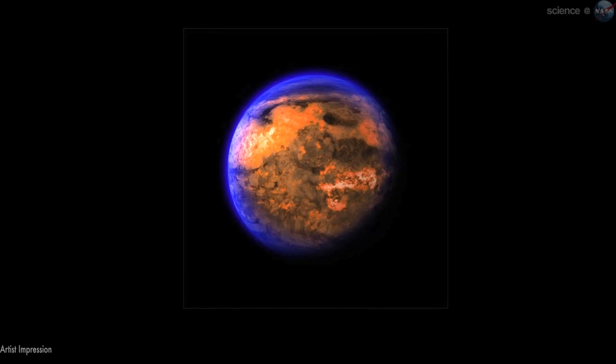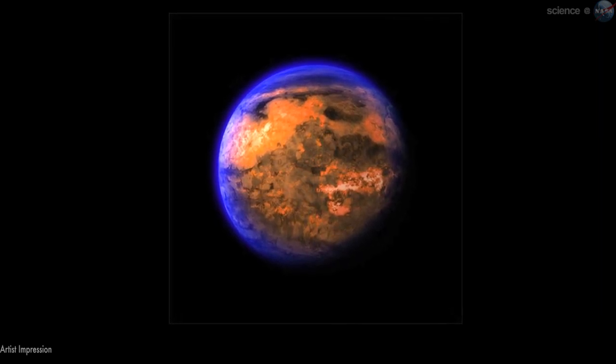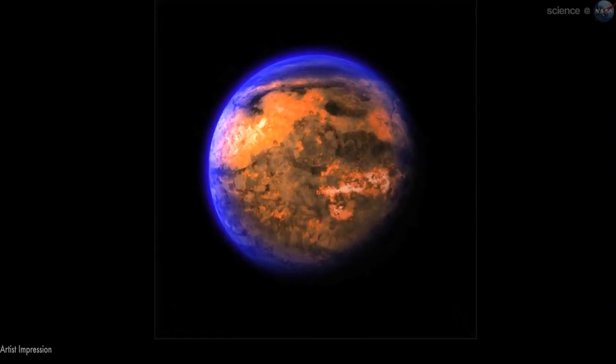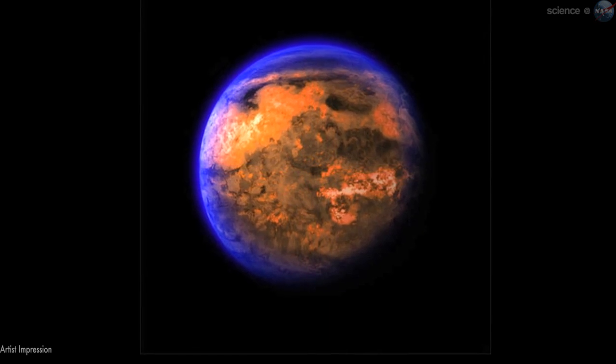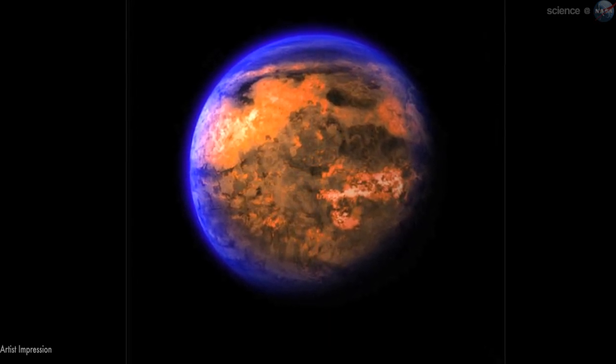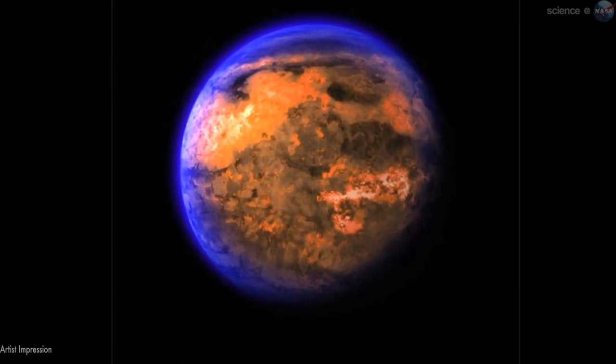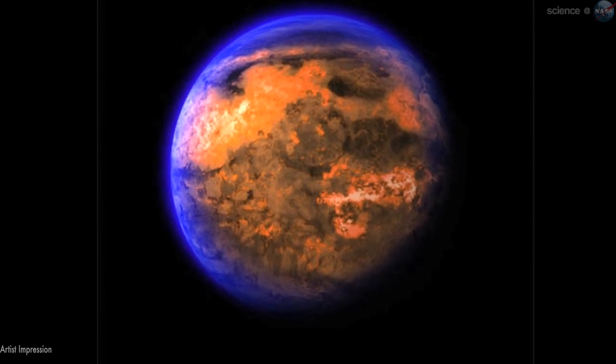About a fifth of the planet's mass must be made of light elements and compounds, including water. Given the intense heat and high pressure these materials likely experience, researchers think the compounds likely exist in a supercritical fluid state.